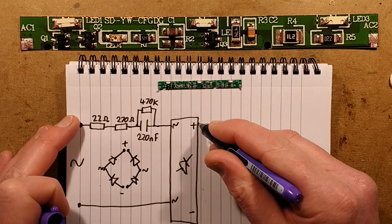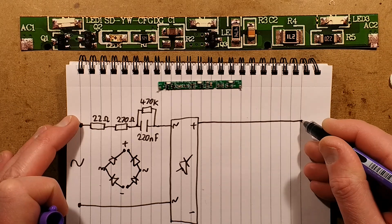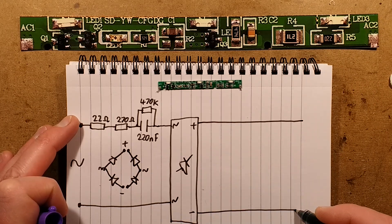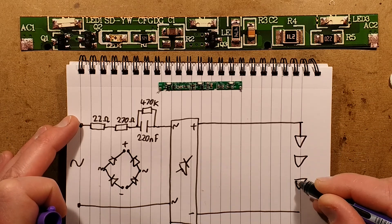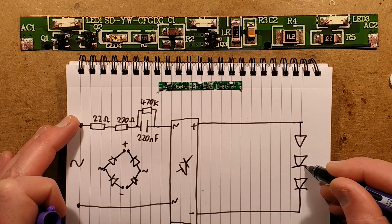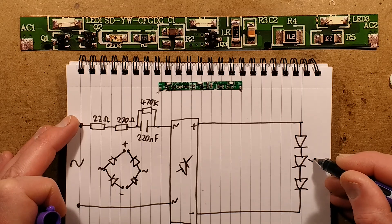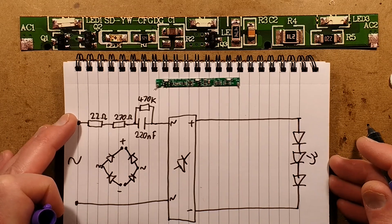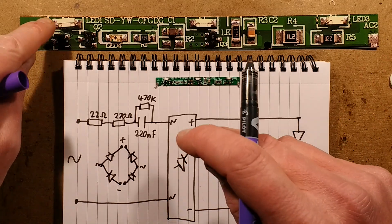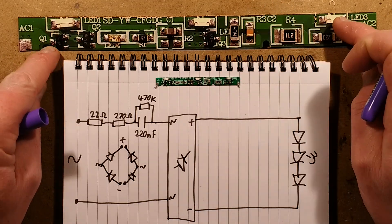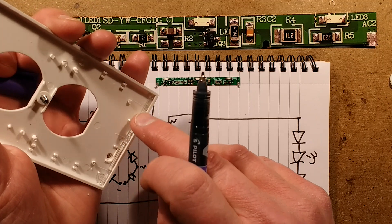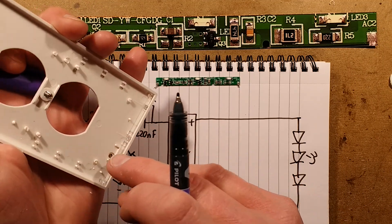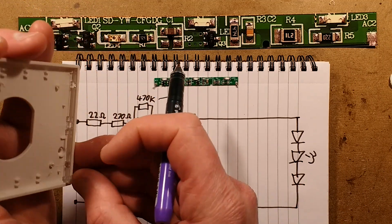The output then follows a very standard topology for these nightlights. The LEDs are wired in series—one, two, three LEDs in series. One lazy little beam of light coming out there. These are side-emitting LEDs that are side-emitting into a plastic lens assembly.